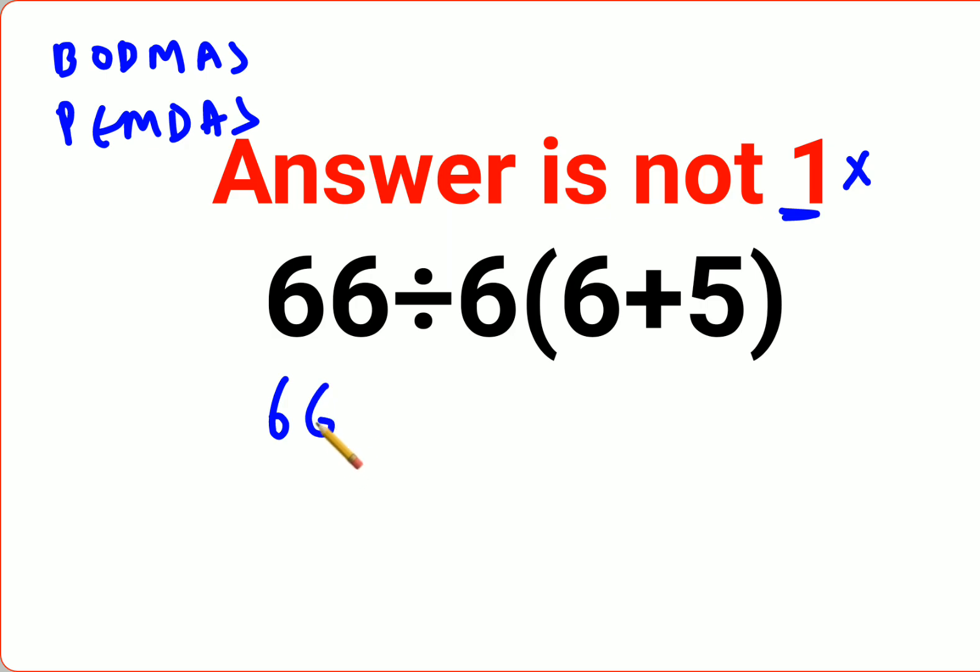So we'll keep 66 divided by 6 as it is and first we'll do the bracket which is 6 plus 5 that gets you 11. And since there is no sign between 6 and the bracket means the sign supposed to be done is multiplication.